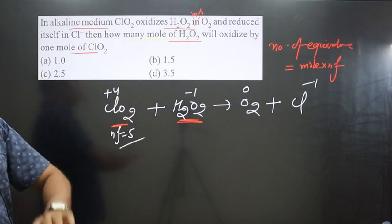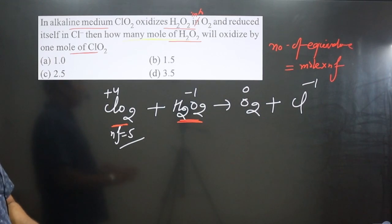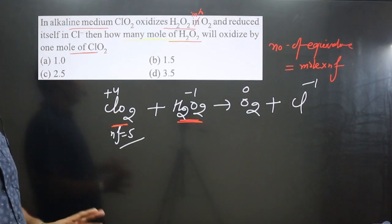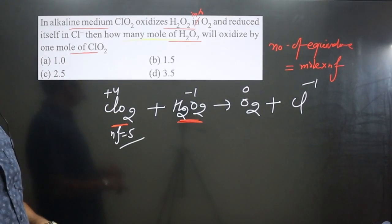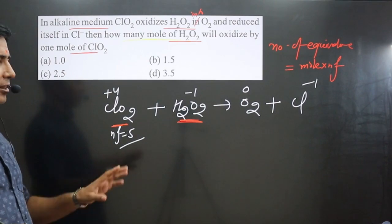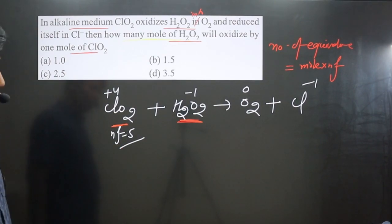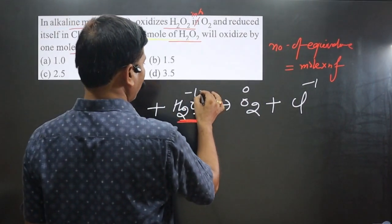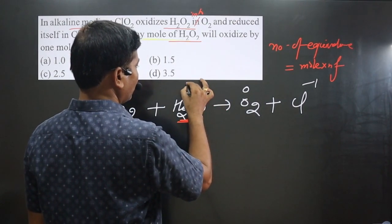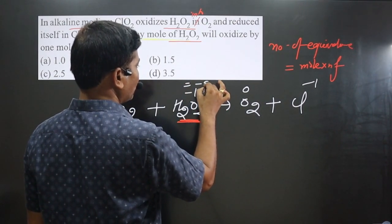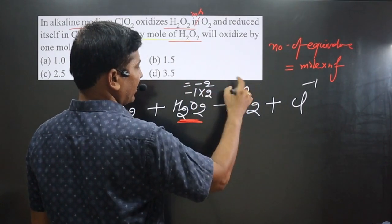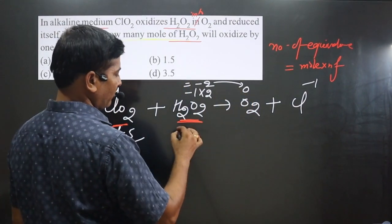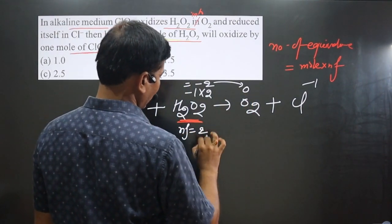In the case of hydrogen peroxide, always keep in mind that the n-factor for H₂O₂ is always 2, whether it undergoes oxidation or reduction. We can verify: oxygen is at −1, so 2 oxygens give −2; on the other side it is 0. The difference is 0 − (−2) = 2, so the n-factor value is 2.